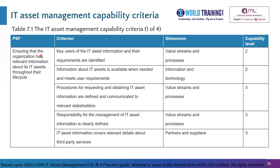For the PSF 'ensuring that the organization has relevant information about its IT assets throughout their life cycle,' at Level 2 we have two criteria: when the key users of the IT asset information and their requirements are identified, and when the information about IT assets is available when needed and meets user requirements. The dimensions mapped are value streams and information and technology.